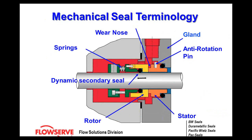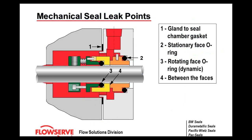Some typical mechanical seal terminology: the springs, rotor, and stator; the anti-rotation pin which holds everything together; and the gland — adaptive hardware that allows you to bolt your seal to your pump. The wear nose is always on the softer of the two face combinations — if you have silicon carbide versus carbon, the wear nose will be on the carbon. There's also a dynamic secondary seal, or dynamic o-ring, on pusher-style seals. Anywhere there's a gasket or o-ring, there could be a leak point.